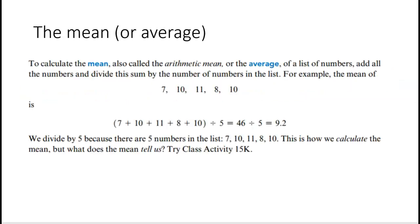Let's start with the mean or the average. It's the arithmetic mean or the mean or the average. All we do is we add up all the numbers and divide by the sum of the numbers. So we've got 7, 10, 11, 8, and 10. We add them up, divide by 1, 2, 3, 4, 5, and we get our mean.